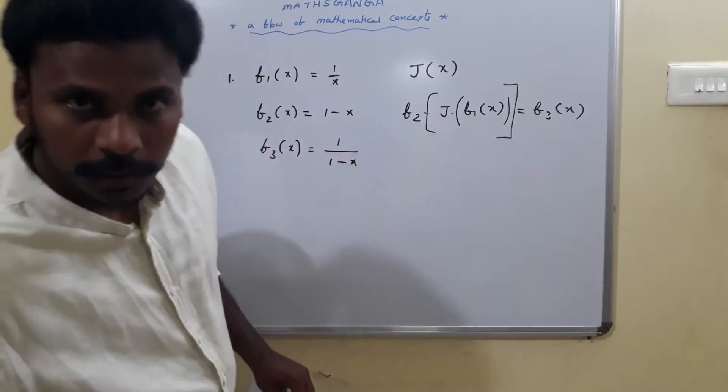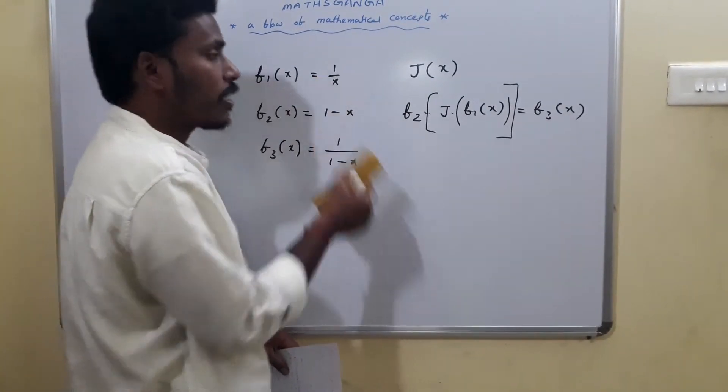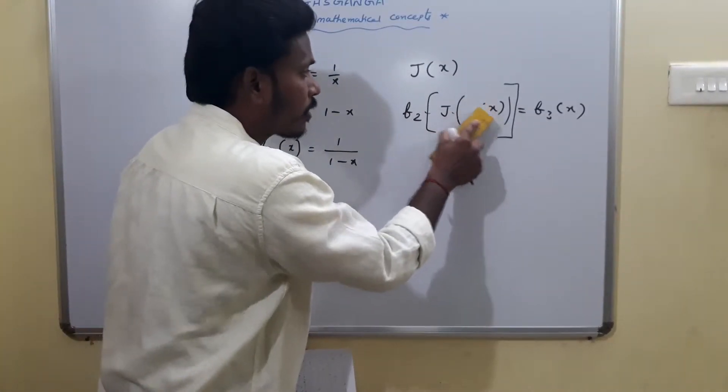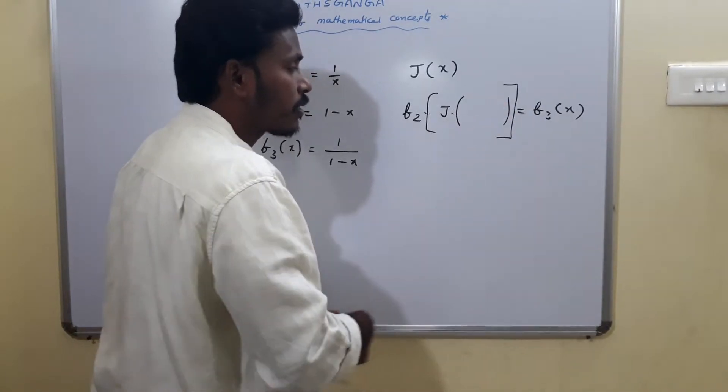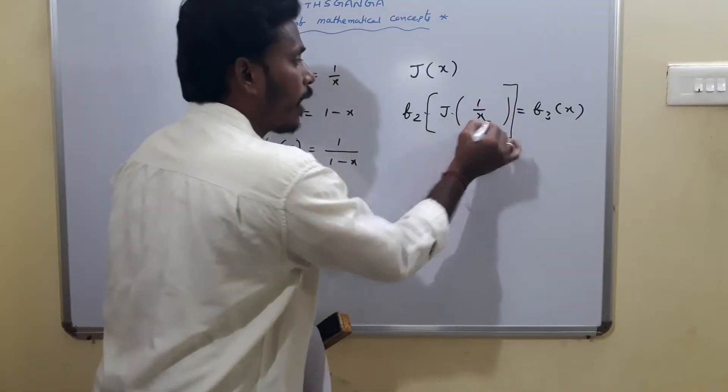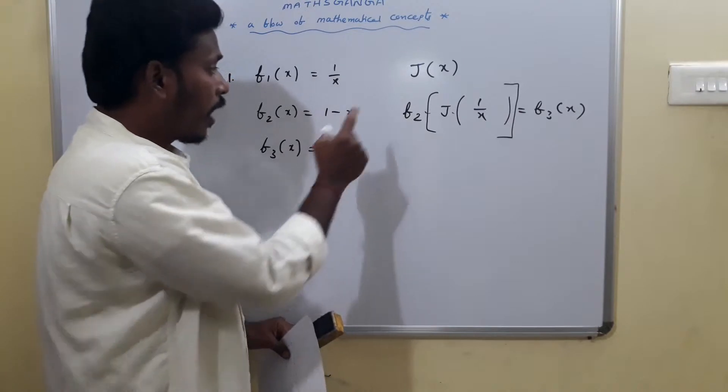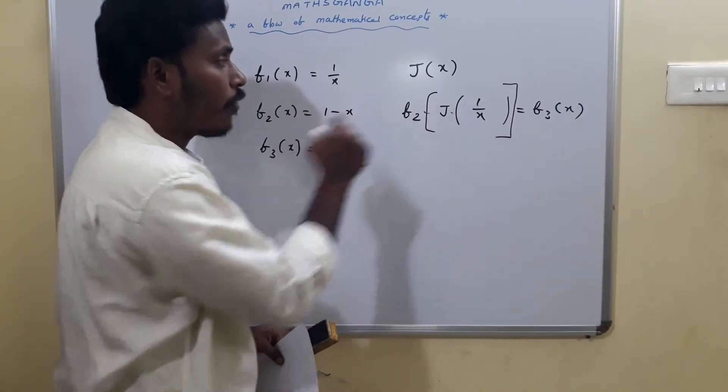They are given that F1 of x as 1 by x, so replace this F1 of x with 1 by x. Now what I have here? F2 of J of 1 by x.